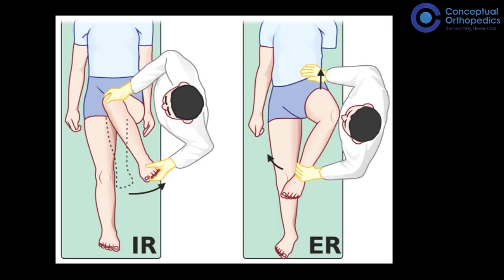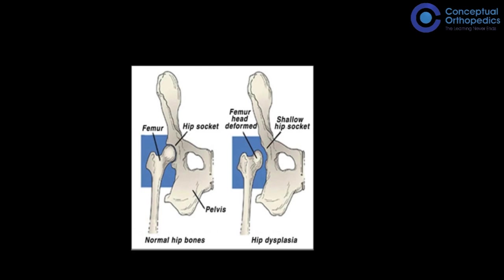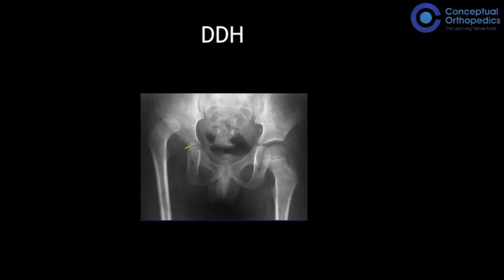In pediatric orthopedics, if there is something wrong with the femoral head, acetabulum, or hip joint, the two movements that are limited are internal rotation and abduction. When the examiner takes the leg into internal rotation and abduction these are the most sensitive indicators of hip joint pathology. A small femoral head with a shallow acetabulum and superolateral displacement of the head, with a broken Shenton's arch, is developmental dysplasia of the hip (DDH).